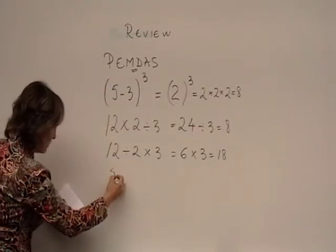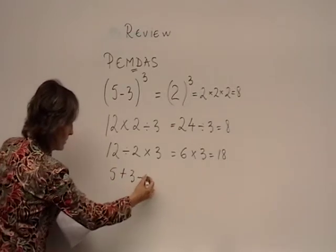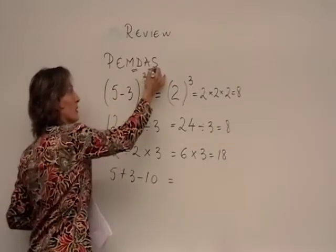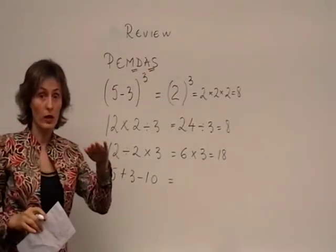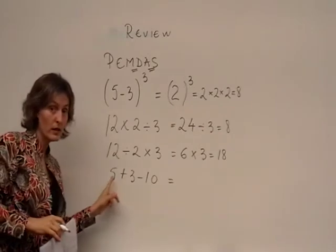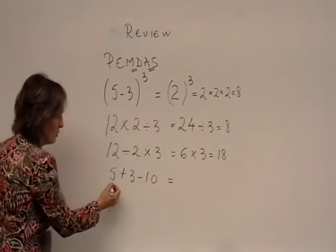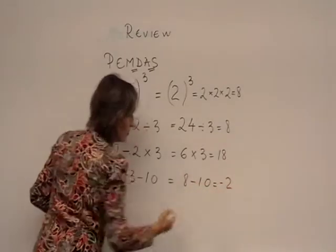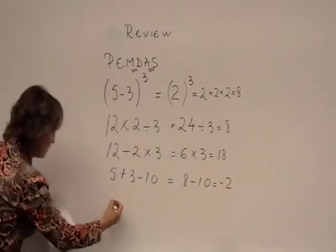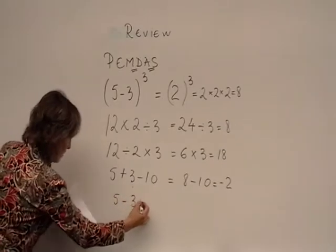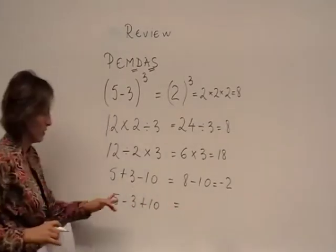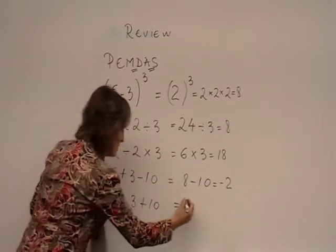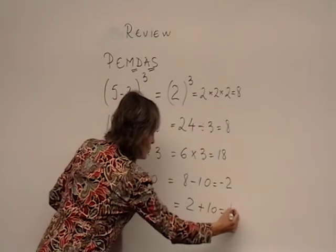Next example was 5+3-10. We have addition and subtraction. They are equal as well, but again, the left to right power. So 5+3 goes first, 8-10 is negative 2. And the next one was 5-3+10. Subtraction goes first here. We do subtraction first, that would be 2+10 equals 12.